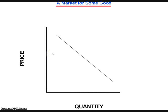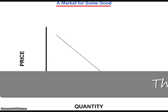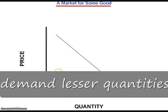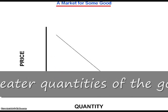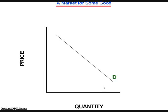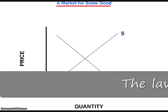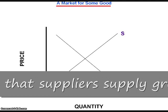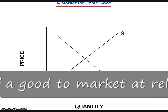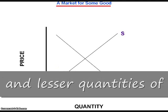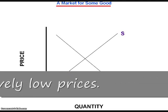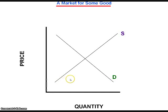On the demand side of the market, consumers behave according to the law of demand, which holds that at higher prices consumers demand lesser quantities of the good, and at lower prices they demand greater quantities. Economists illustrate this with a curve that slopes downward and to the right. On the supply side, suppliers behave according to the law of supply, which holds that at higher prices suppliers supply greater quantities and at lower prices they supply lesser quantities — illustrated with a curve that slopes upward and to the right.